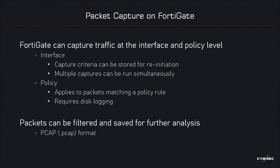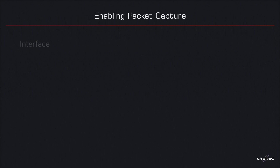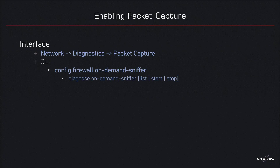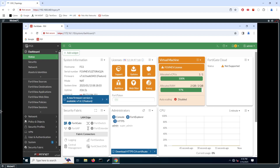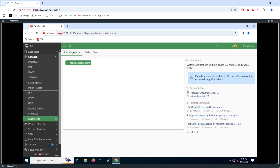Because of the disk logging requirement, Policy Packet Capture is not usable on a virtual firewall. Interface Packet Capture, however, is what we will look at now. You can run it from the GUI or from the command line. On the CLI, the relevant commands are 'config firewall on-demand sniffer' to configure captures, and 'diagnose on-demand sniffer' to list, start, or stop them. Let's go to Network and Diagnostics and start with the GUI.